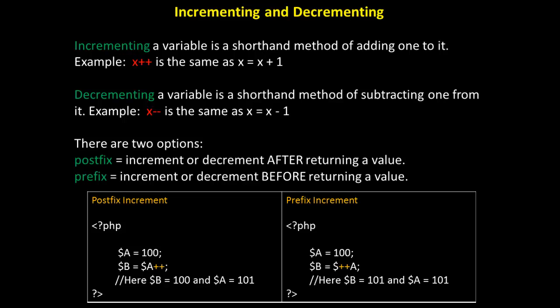To further illustrate the differences between these two, let's look at the example. To the left, you see postfix increment. We have two variables, A and B. A has a value of 100. B is going to be assigned the value of A, but A is undergoing a postfix increment. So A is going to return the value and assign it to B first and then increment or add one to itself. So here B would be 100 and A would be 101.